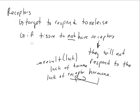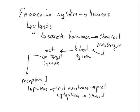So to recap: the endocrine system is made up of glands that secrete chemicals called hormones. These go into our blood system or circulatory system and, coursing through your blood, act on what we call target tissues — but only if the target tissue has receptors for that particular hormone.